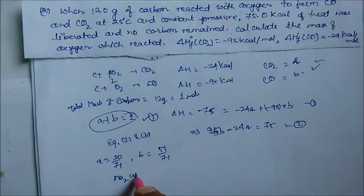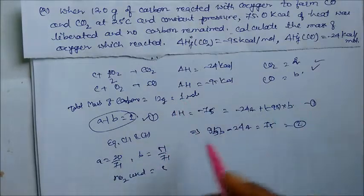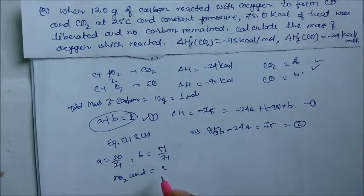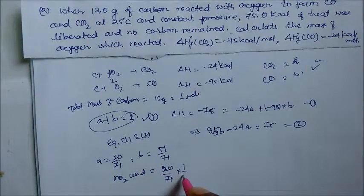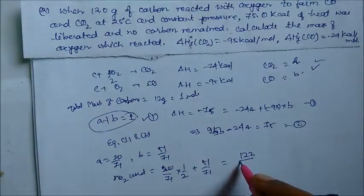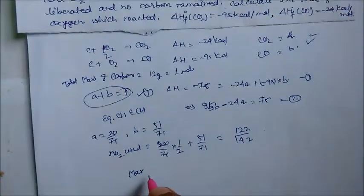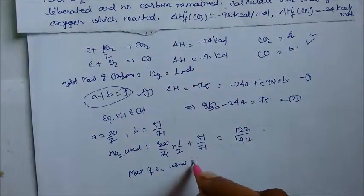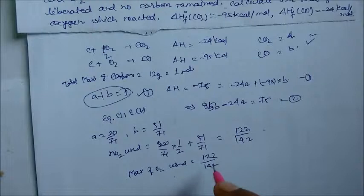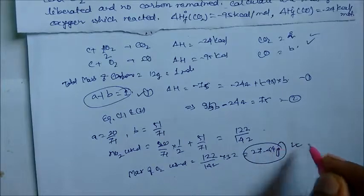The number of moles of oxygen used: A (CO₂) uses 1 mole O₂ and B (CO) uses half mole O₂. So oxygen used equals 20/71 into 1 plus 51/71 into half, which equals 122 by 142. Mass of oxygen used is 122 divided by 142 multiplied by 32, giving 7.49 grams. This is our answer.